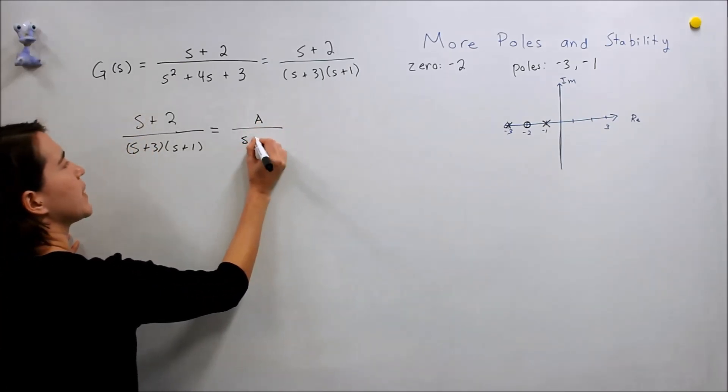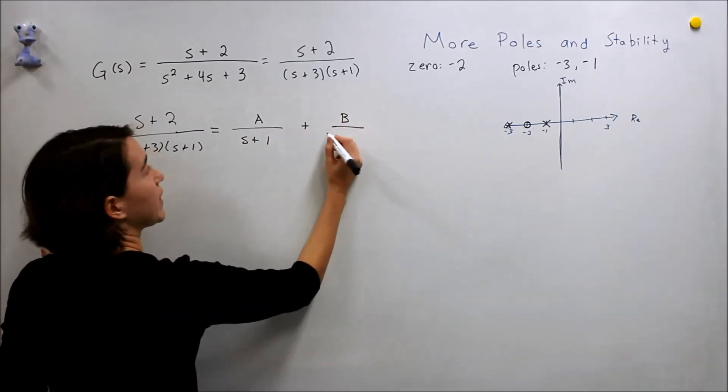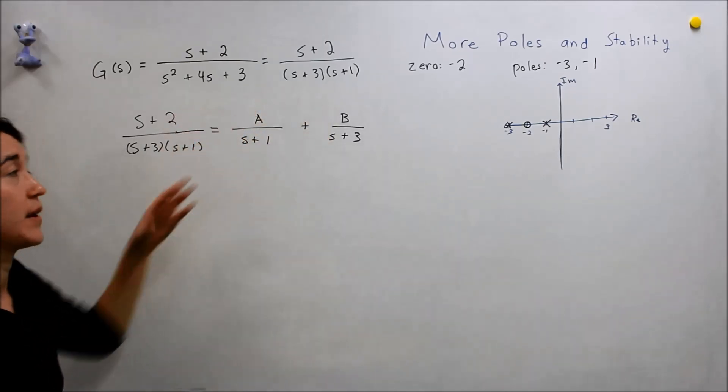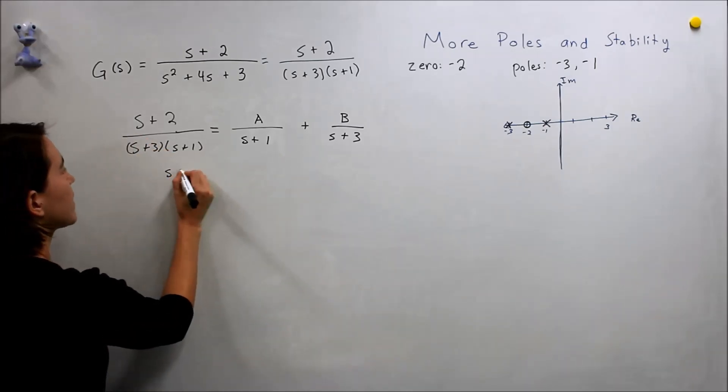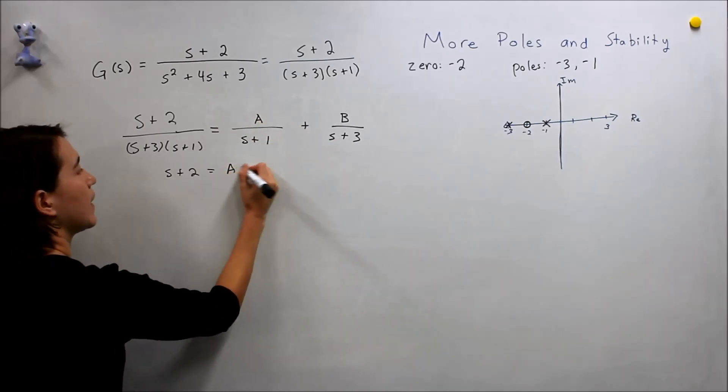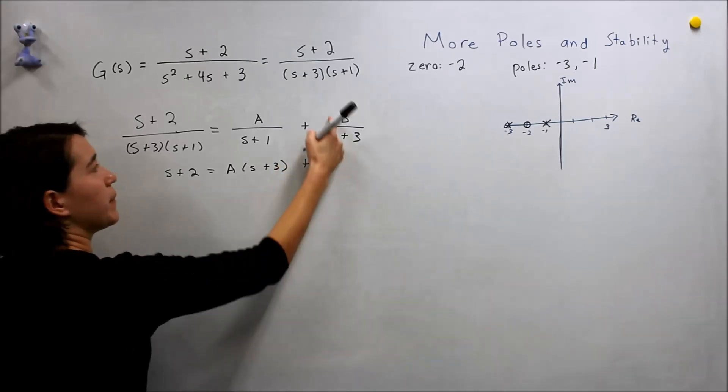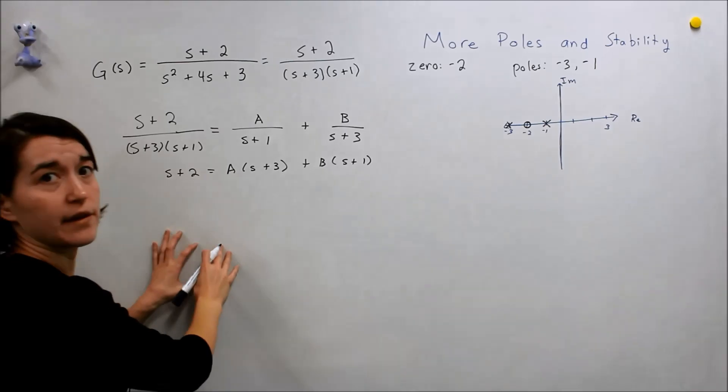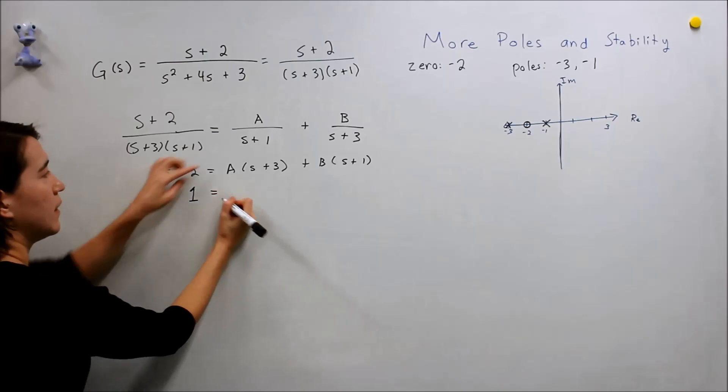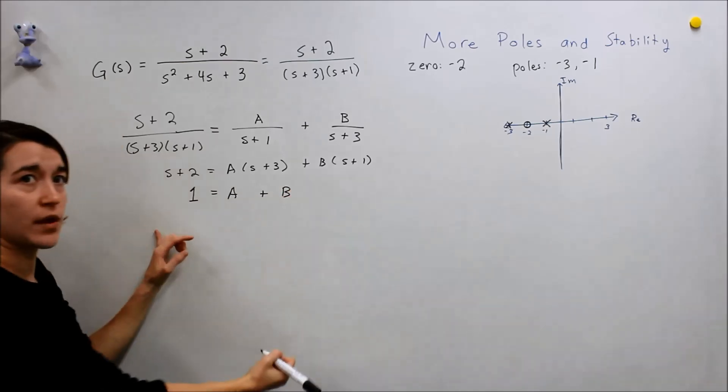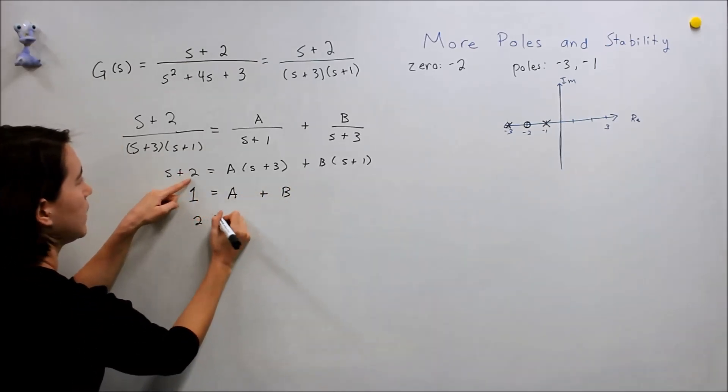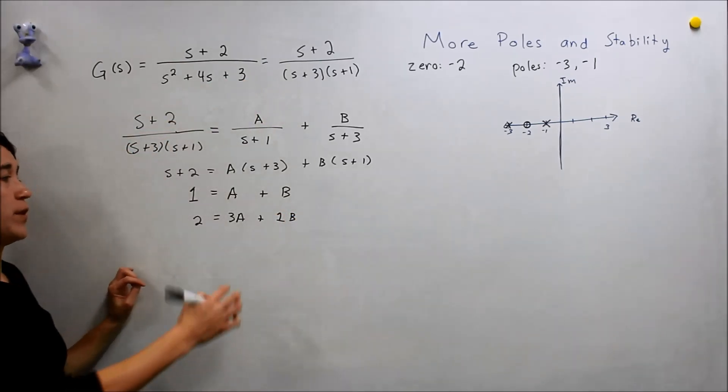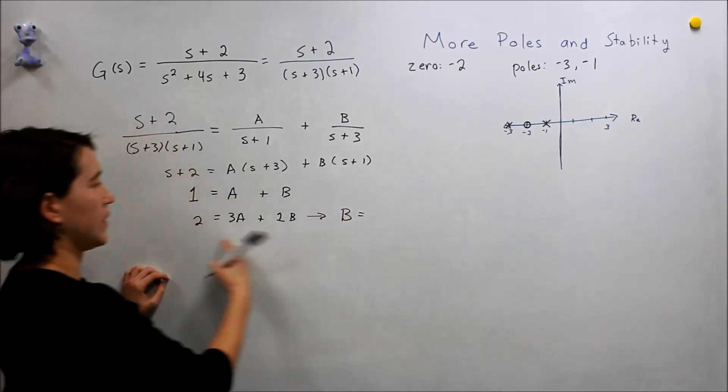We can do our partial fraction expansion. We have a, we'll do s plus 1 here, and b, some value we have to figure out, s plus 3. So if we do our partial fraction expansion here, we can figure out what a and b are and plug them in. If we look at the numerators, we would have s plus 2 equal to a times s plus 3, and then b times s plus 1. Now we can separate the s values and the constant values. This becomes, we have 1s here equals as plus bs. That's one expression. Looking at the constants here, we have 2 equals 3a plus 1b.